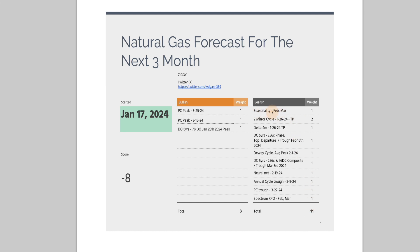Seasonality — February and March are weak. The two mirror cycle just hit a peak on the 26th, so they end up pointing down. The Delta — 4-month — hit a peak on the 26th. The dominant 5-year cycle, which is a 256-cycle phase top departure, has a trough hitting on February 16th, so this is down. The Dewey cycle is going to peak around February 1st, so it'll be turning down in a couple more days.